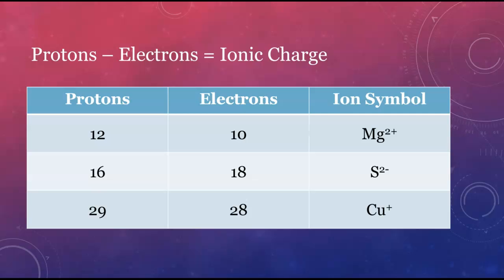Metals form cations, and nonmetals form anions. Metalloids can theoretically form either cations or anions, depending on the situation. The equation, protons minus electrons equals charge, can be rearranged algebraically.